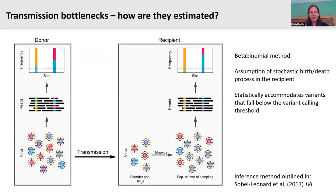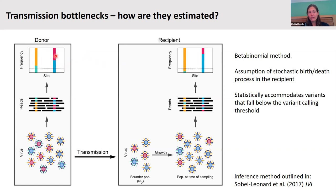What we see from deep sequencing is, in the donor, a virus population with variants at certain frequencies — for example, a green variant and a blue variant at different frequencies. There's a dashed line at the variant calling threshold; below that we don't know whether a variant is real. There's a founding population — the bottleneck size — and then growth within the recipient host. The beta binomial method uses the variants identified in the donor above the calling threshold, along with information on whether those variants appear in the recipient and at what frequencies, to infer the founding population size.